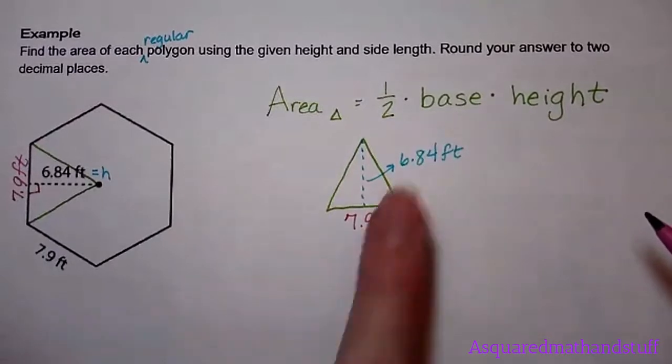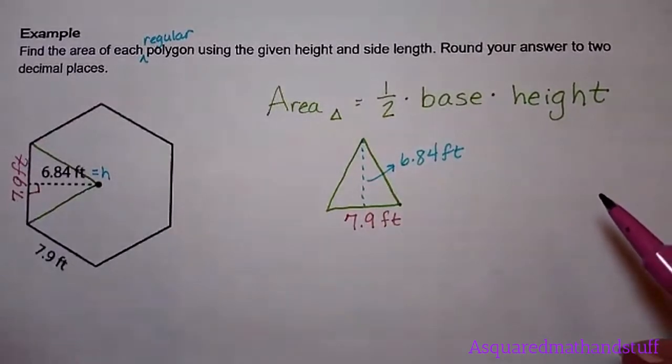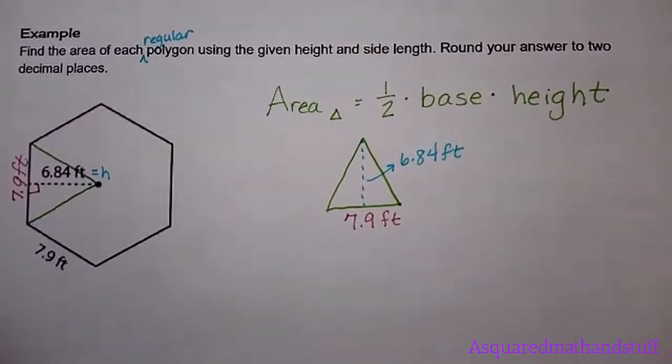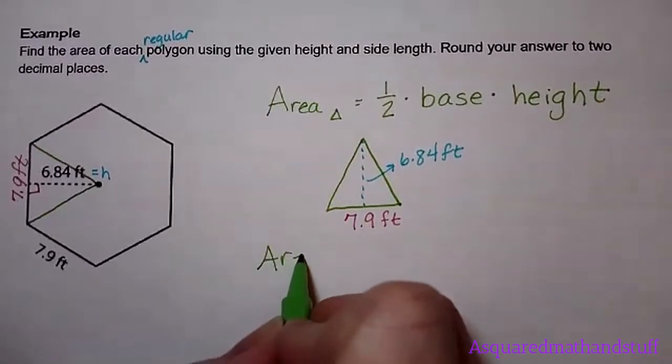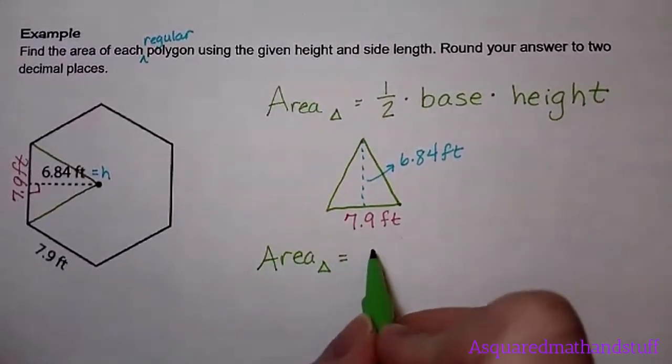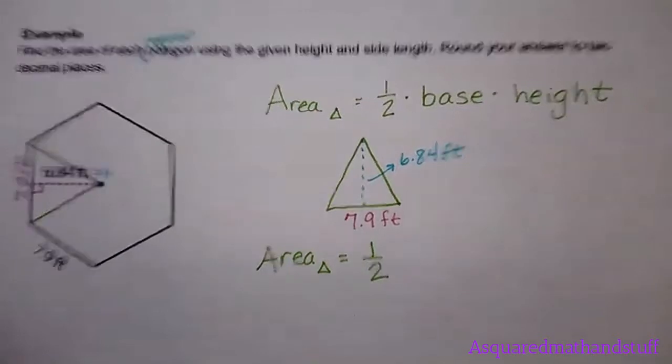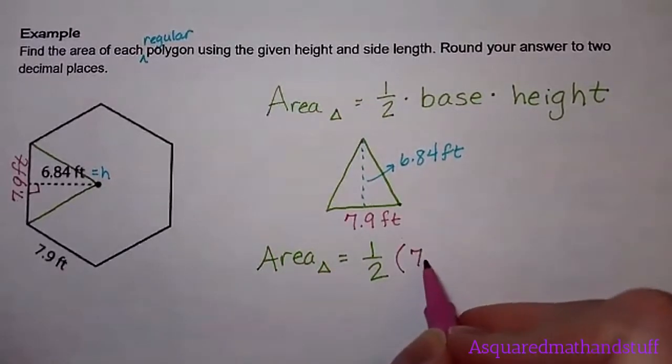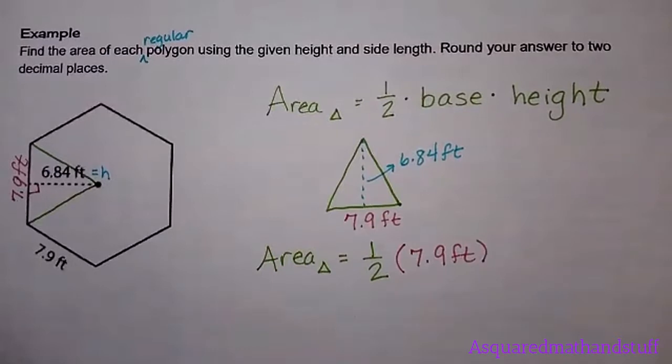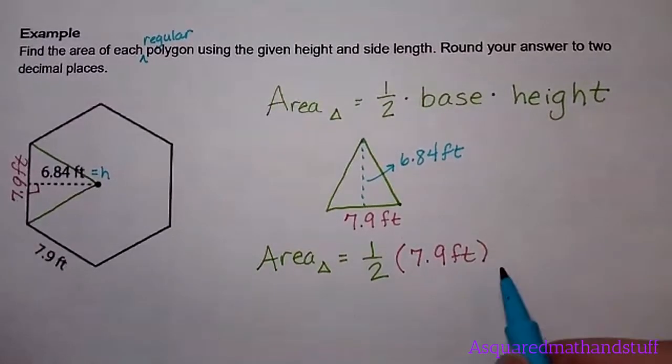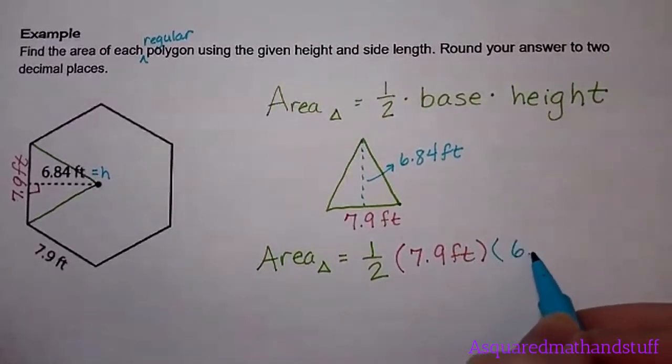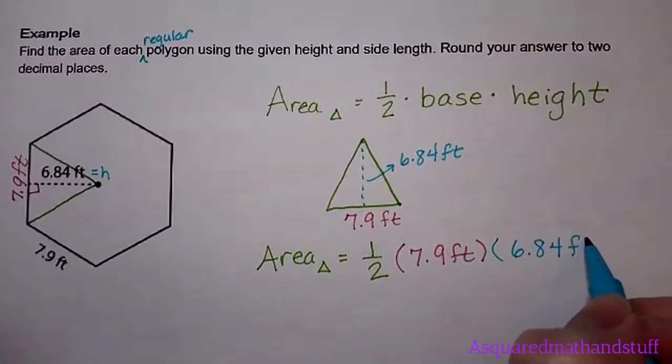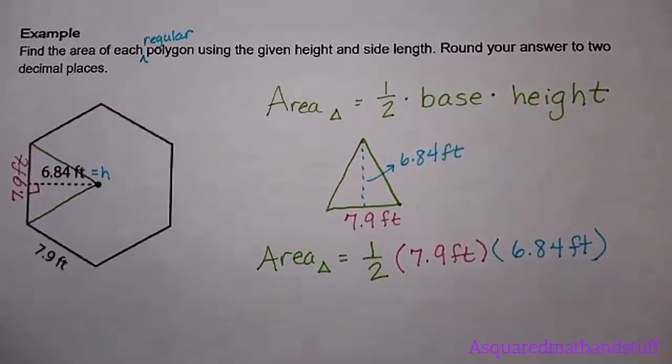So calculating the area, we have one-half base times the height. Base we know is 7.9. So if we take area of our triangle, we have one-half times the base, 7.9 feet, and then times the height, which is our 6.84 feet. Multiply that through and we end up with 27.018 feet squared.